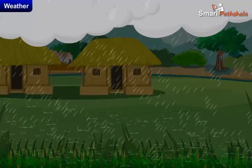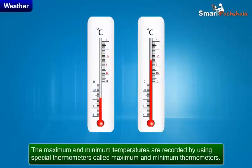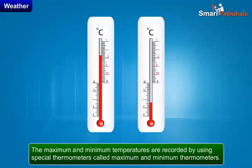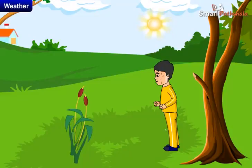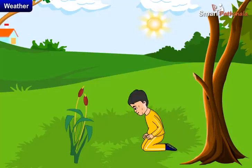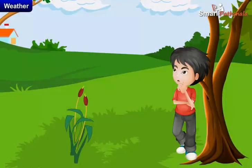Sometimes we may find heavy rain followed by bright sunshine. The maximum and minimum temperatures are recorded using special thermometers called maximum and minimum thermometers. All changes in the weather are caused by the sun. We experience the maximum temperature of the day in the afternoon, while the minimum temperature occurs in the early morning.